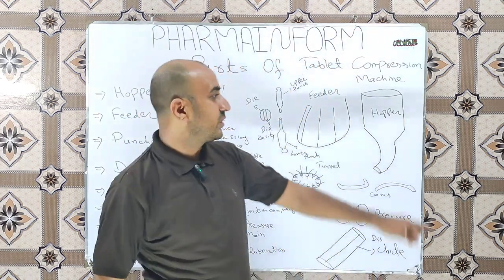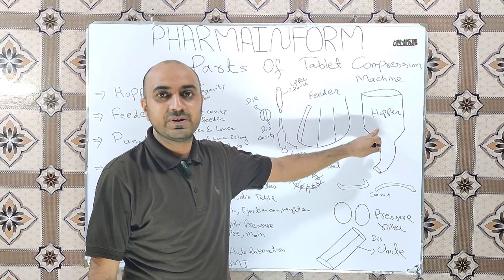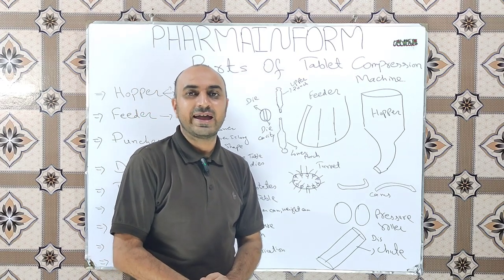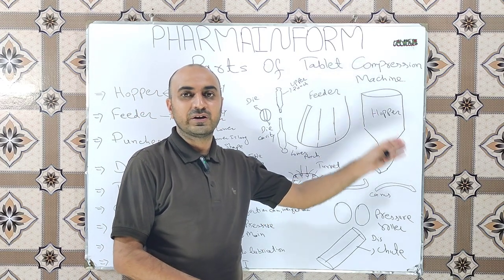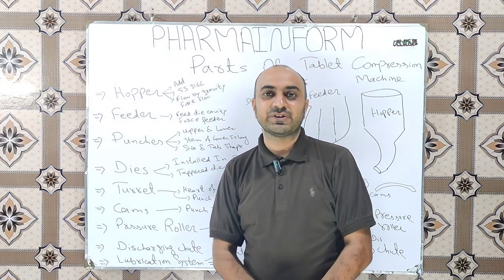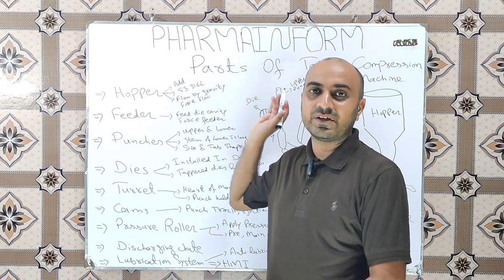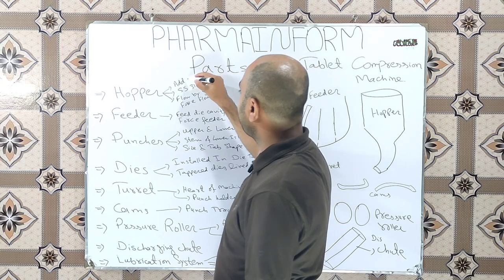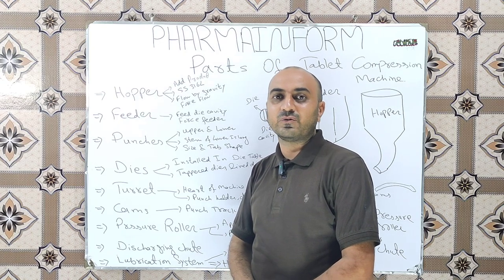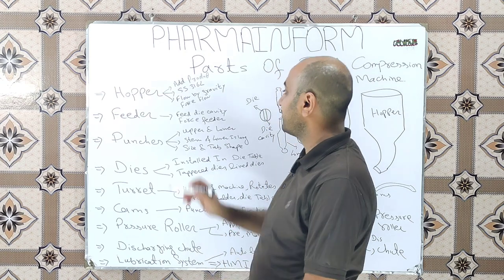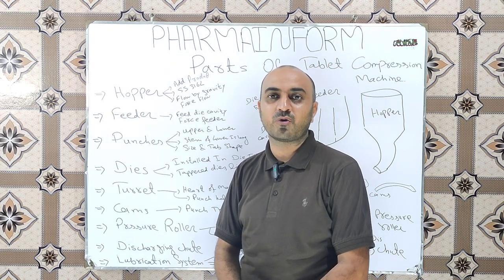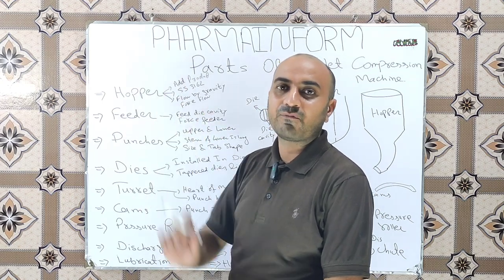The first part is the hopper. You can see in the diagram — this one is the hopper. It is one of the most important parts of the compression machine. It is the part where we add or load our powders or granules to start the tablet compression process. The hopper is made of stainless steel 316L because it has direct contact with the product. The flow of powders or granules from the hopper is done by two mechanisms: one is under gravity and the other is force flow, which uses a vibratory mechanism or rotating rod installed in the hopper.